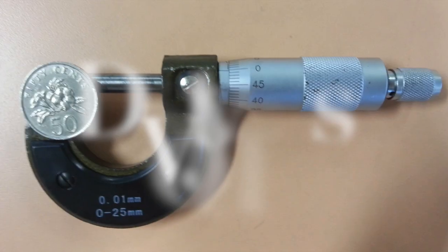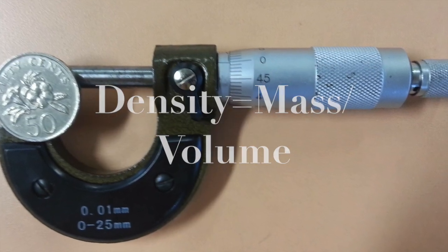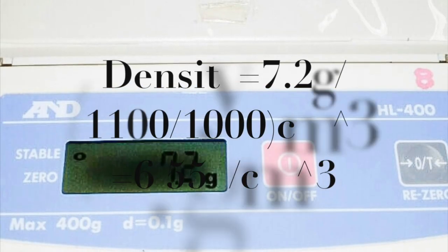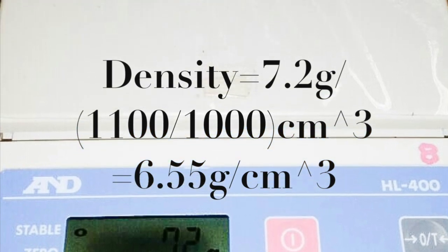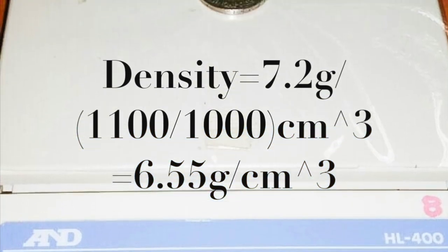Finally, we will find the density of the coin by taking the mass divided by the volume, which shows that the density is 6.55 g per cm³.